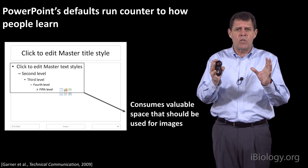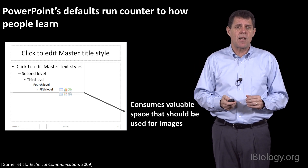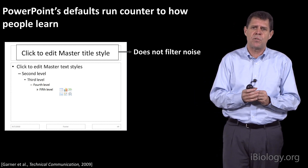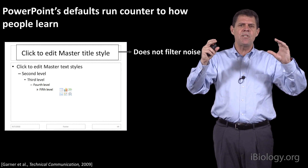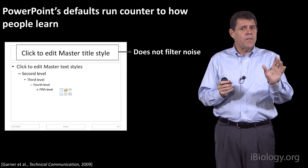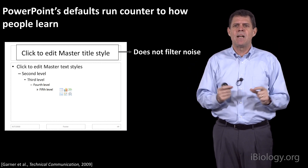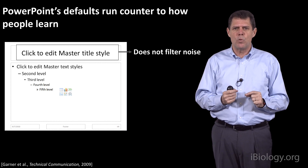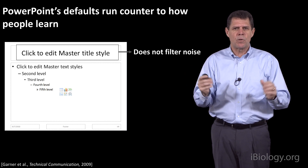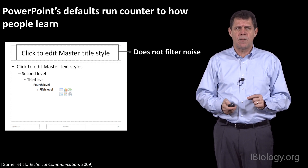PowerPoint's defaults run counter to how people learn. The text box in the body with nested bullets leads people to create too many written words. That text box also consumes valuable space that could be used for images, making slides cluttered. And the headline leads scientists and engineers to write phrase headlines — which on the surface sounds fine, but phrase headlines do not filter noise, which is critical for deciding what to include and leave out.